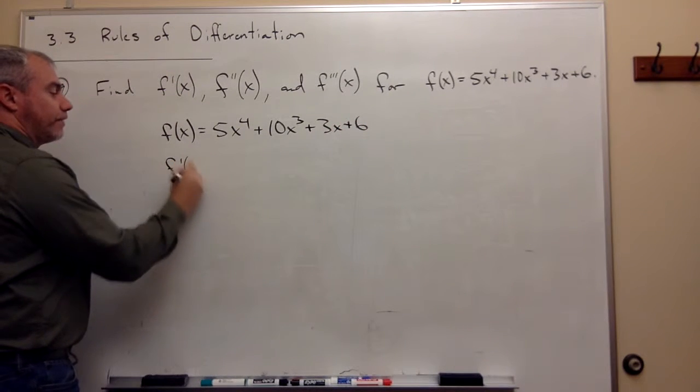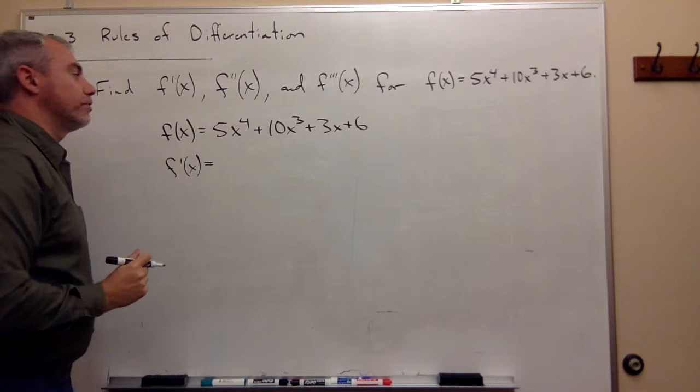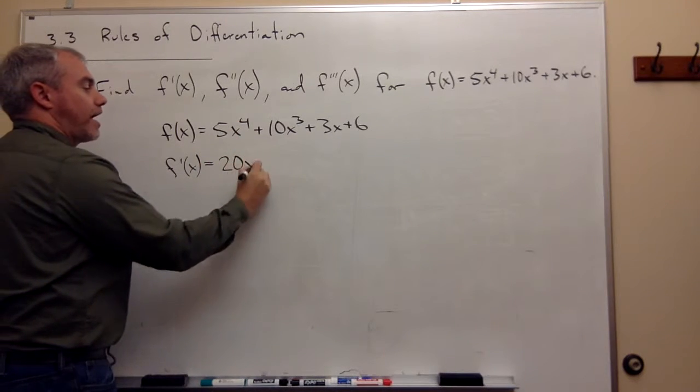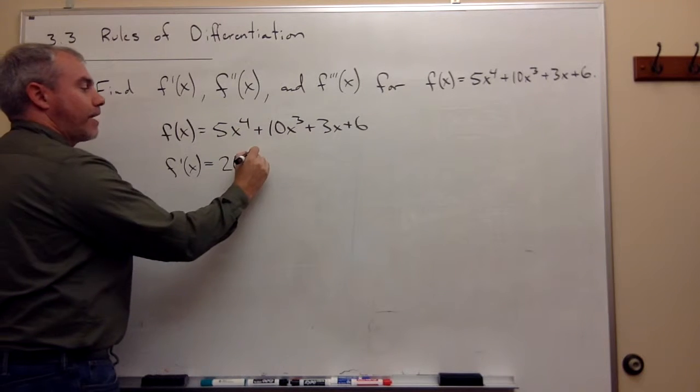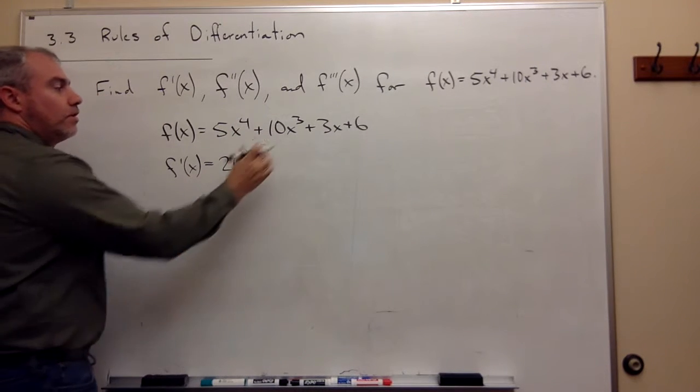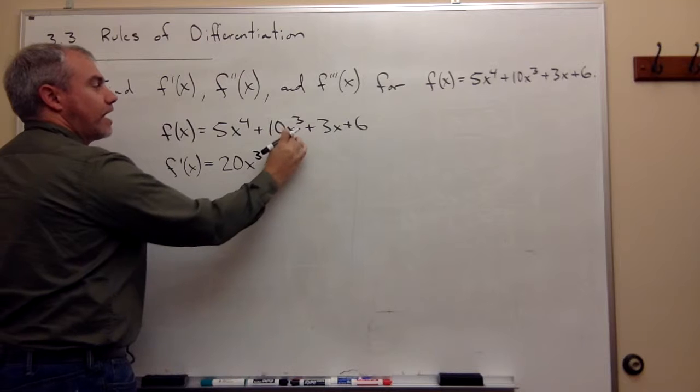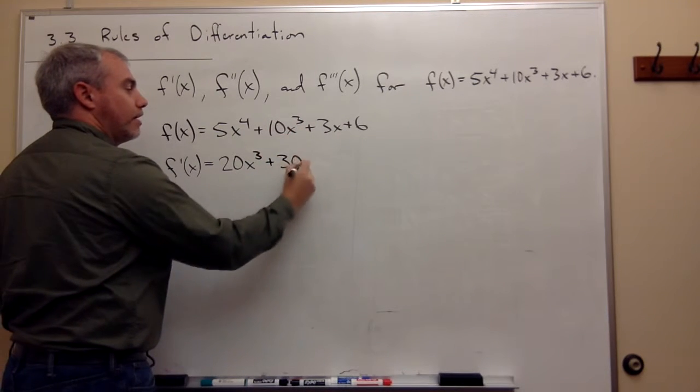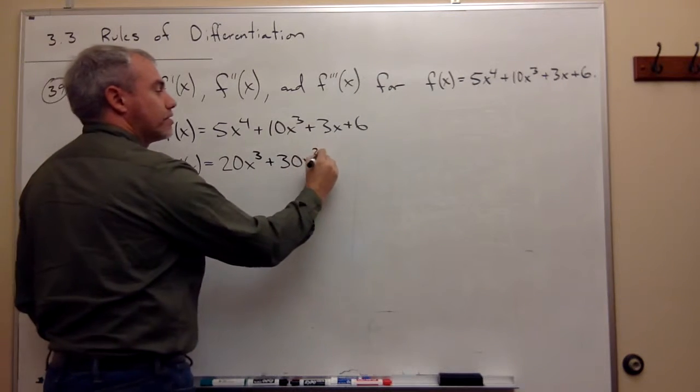Then I take the derivative using the power rule. The derivative of 5x to the fourth, I pull the four down to get 20x, and then I subtract one from the power cubed. What's the derivative of 10x cubed? I bring down the 3, multiply by 10, I get 30x, and I subtract one from the power squared.